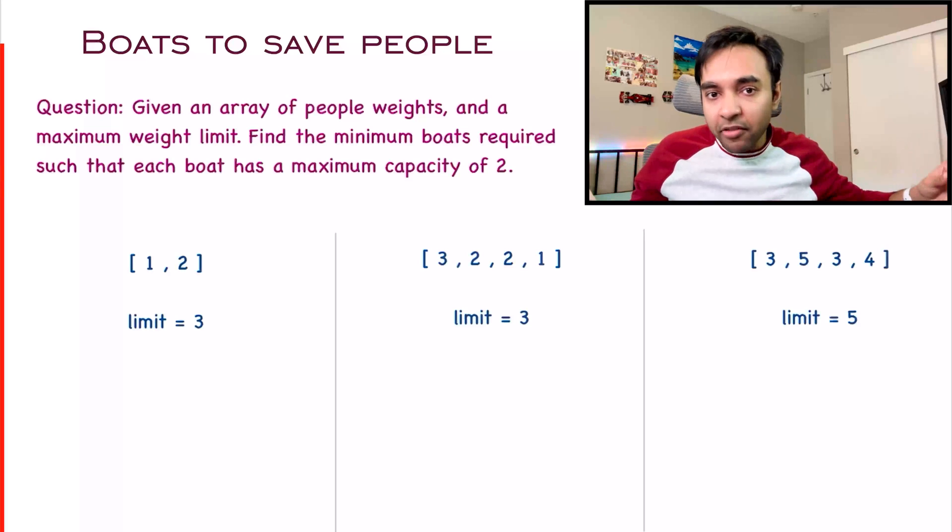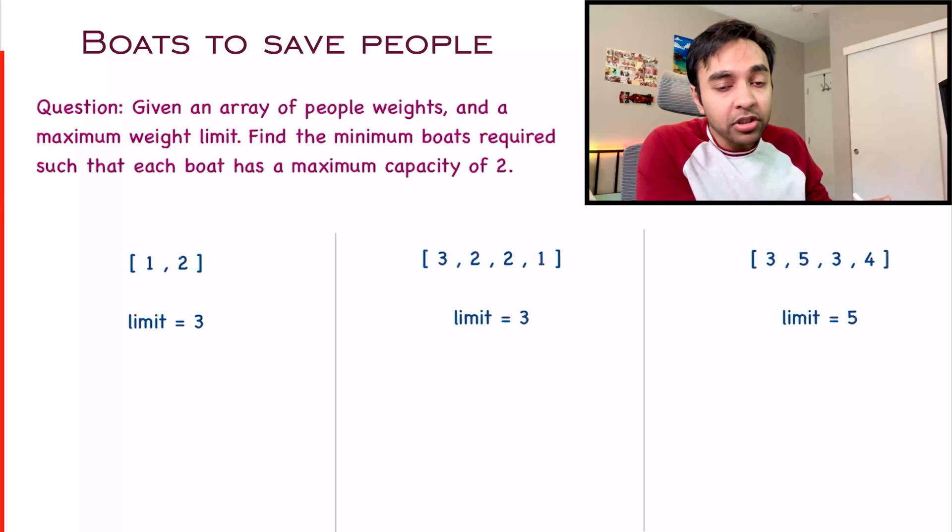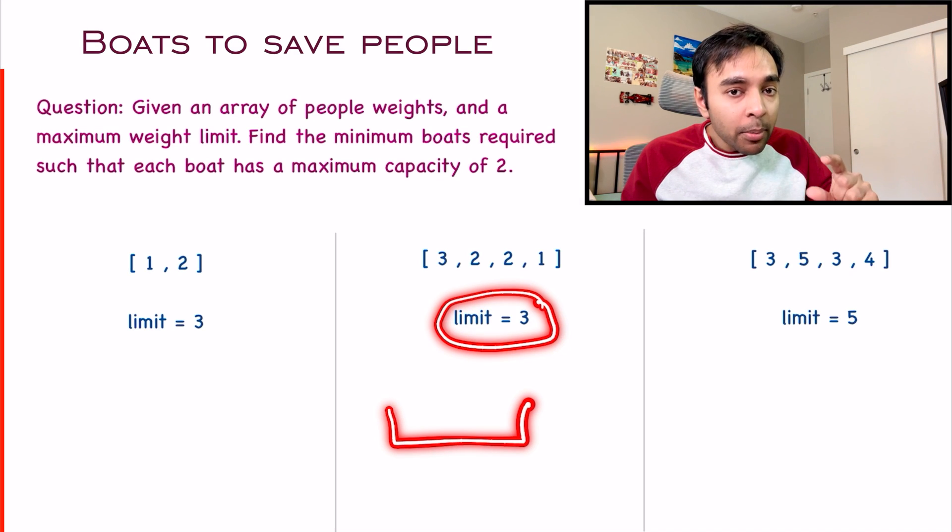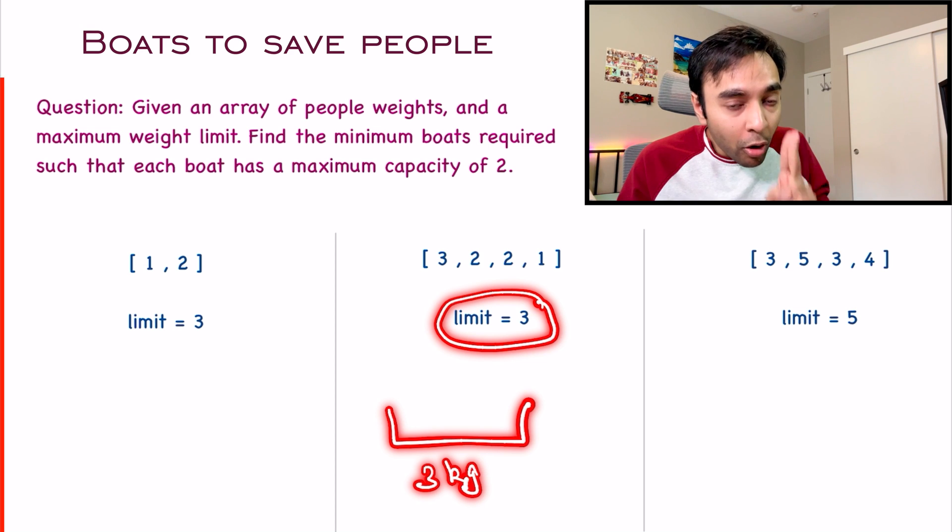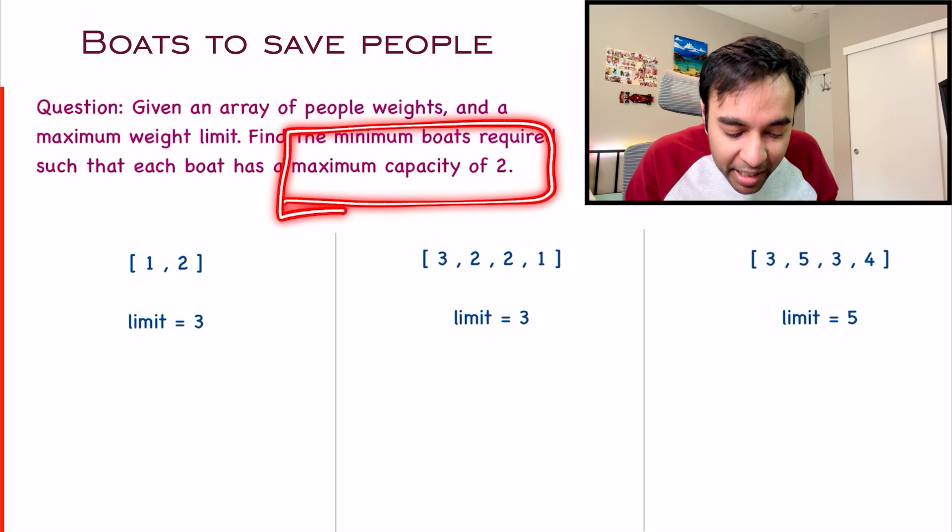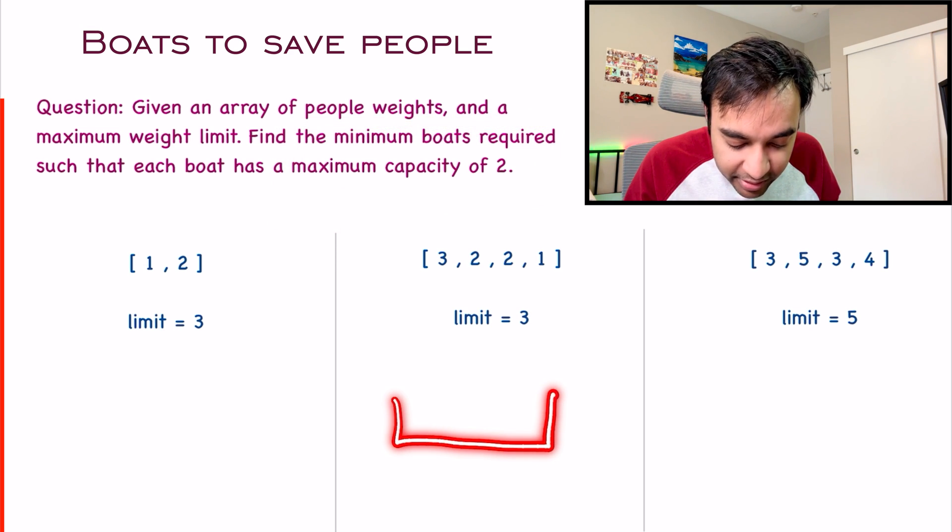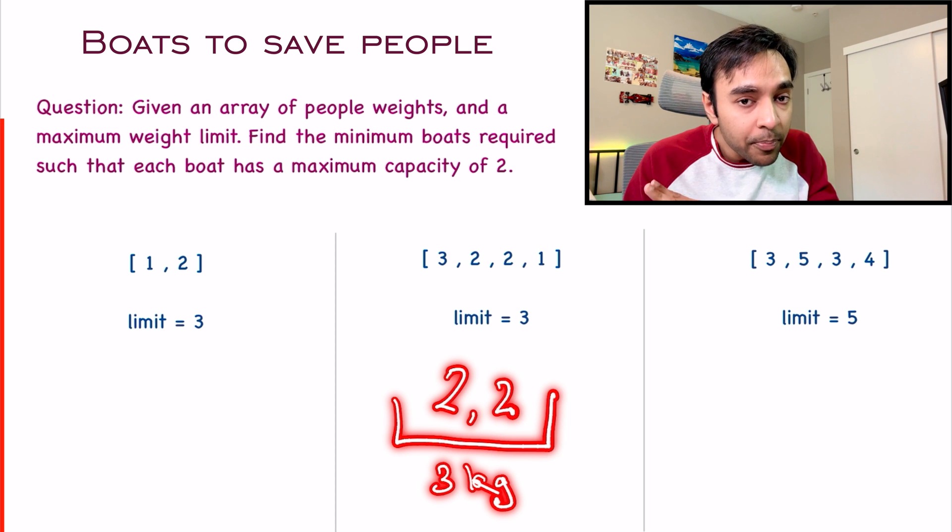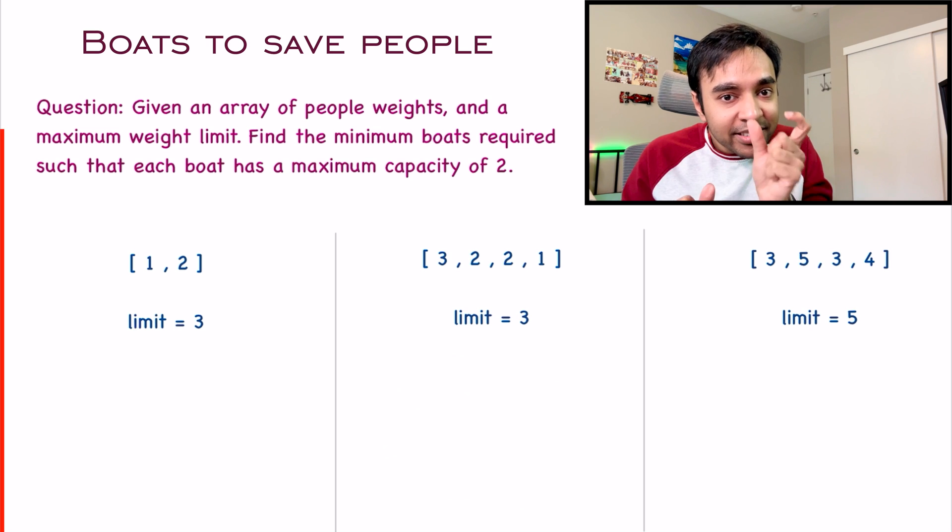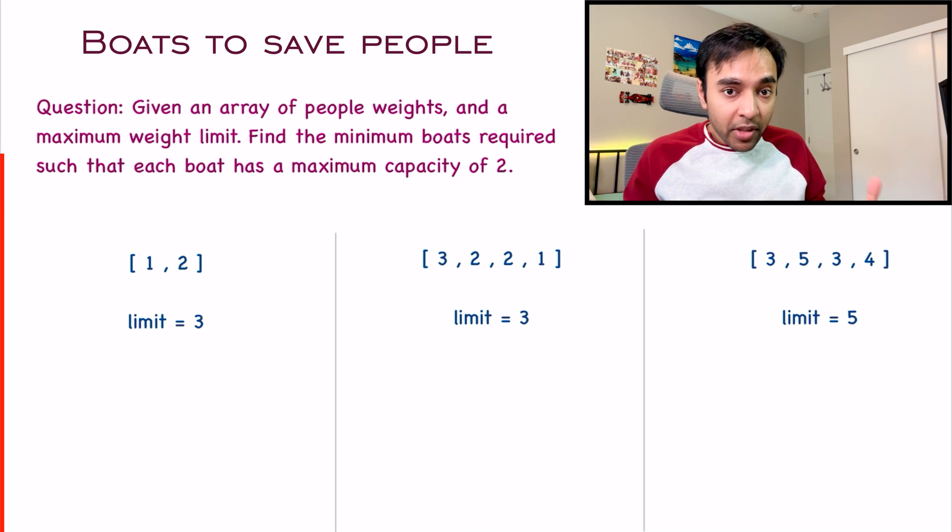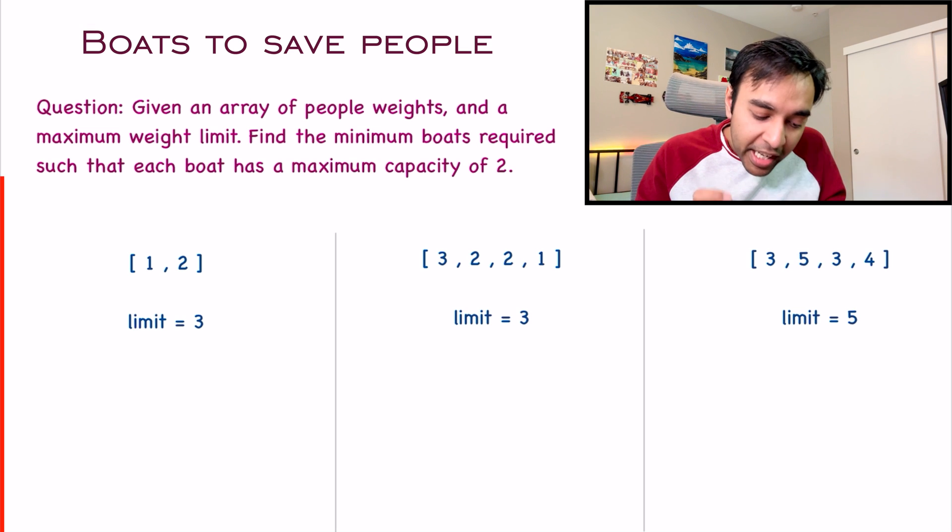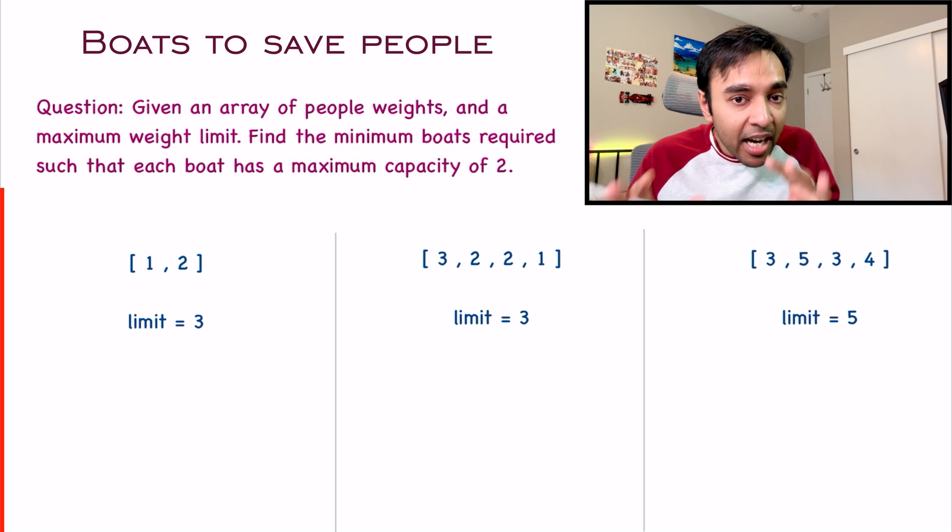After that, you are also given a maximum weight limit. The maximum weight limit here is 3. There are a lot of boats available and these people have to use these boats. The maximum weight a boat can accommodate is this limit. If I have a boat like this, the maximum capacity of this boat is 3 kg, and you are also given a condition that a boat can have a maximum of 2 people. In this boat I cannot have 2 people of weight 2 each, then this boat will sink. The maximum weight is 3.